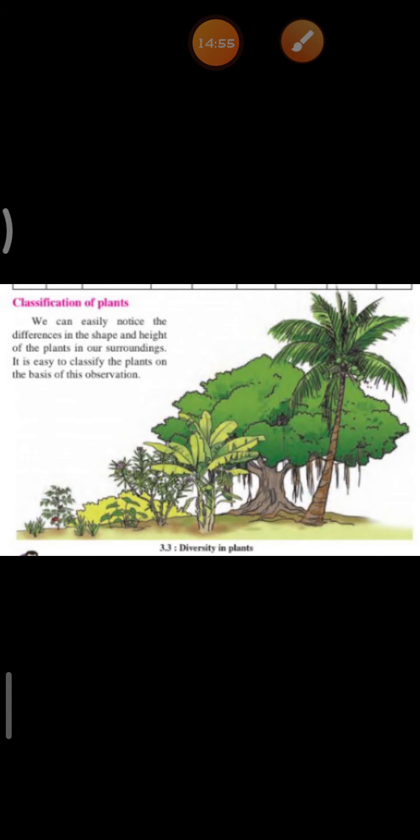Classification of plants: we can easily notice the differences in the shape and height of plants in our surroundings, and it is easy to classify plants on the basis of observation. Some plants are short, some are tall, their arrangement of leaves is different, their fruits are different, their stems may vary, and the roots are different. So based on this we can classify the plants.